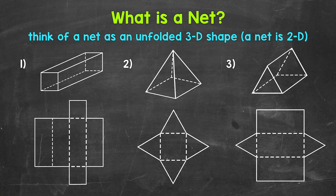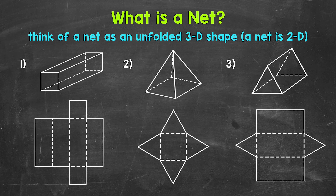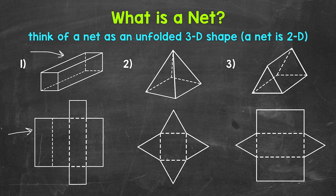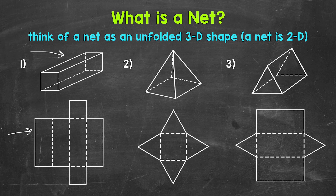Let's move on to nets. Simply put, a net is the 2D or flat form of a 3D shape. You can think of nets as the unfolded form or laid-out-flat form of 3D shapes. Nets show all of the surfaces or faces all laid out. Starting with number one, where we have a rectangular prism — here is the rectangular prism, and below we have its net. If you can imagine folding that net along the dashed lines, it folds into a rectangular prism. This is not the only way to lay out a net of a rectangular prism — there can be different possibilities.